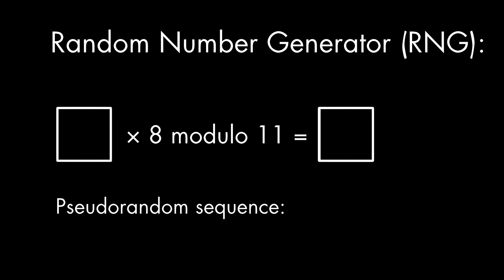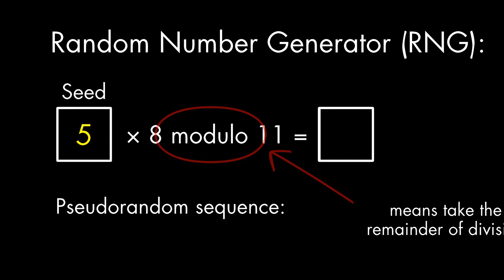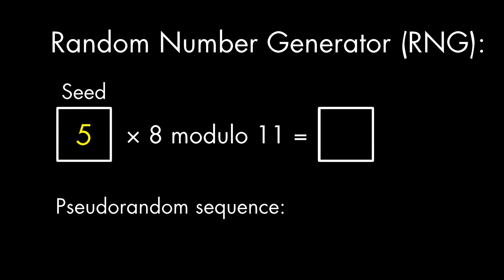Here's an example of a software-based random number generator. This particular generator is going to produce pseudo-random numbers in the range of 1 to 10. We start with some number in this range — let's say 5. We call this number the seed. When we need a random number, we take the seed and multiply it by 8. Then we take the result, divide it by 11, and take the remainder. In this case, that produces the number 7. That's our random number. The 7 also replaces the 5 as the seed. So the next time we need a random number, we start with a 7, multiply it by 8, divide that result by 11, and take that remainder, which is a 1.